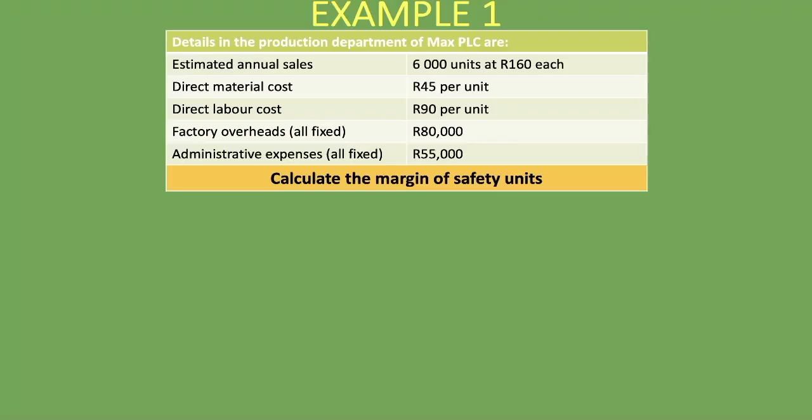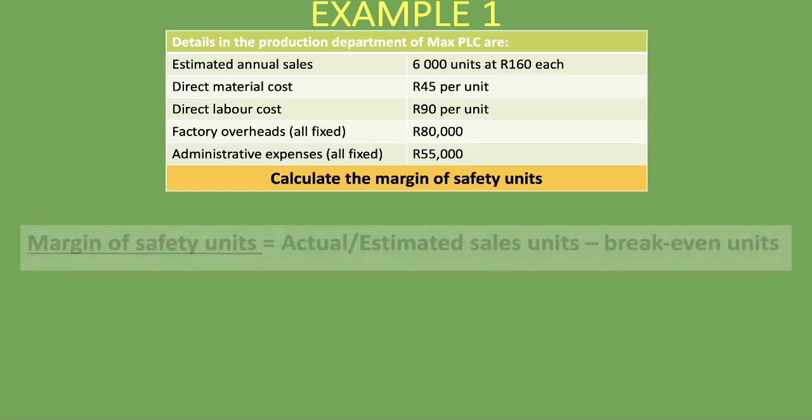Let's look at the example on calculating the margin of safety units. We're told these are the details in the production department of Max PLC. There are 6,000 units at 160 rand each — that's the estimated annual sales. We've got direct material, direct labor, factory overheads which are all fixed, and administrative expenses which are also all fixed. We are asked to calculate the margin of safety units.